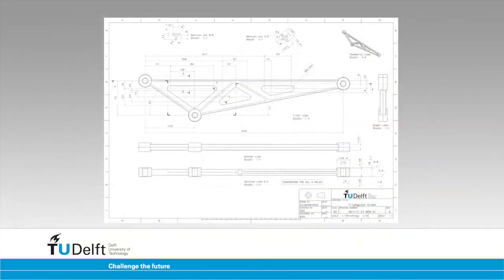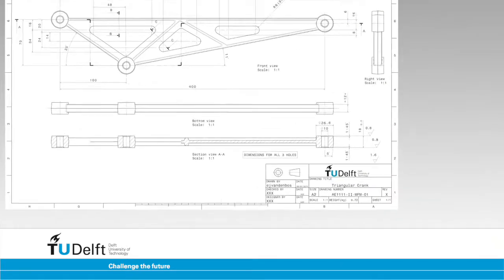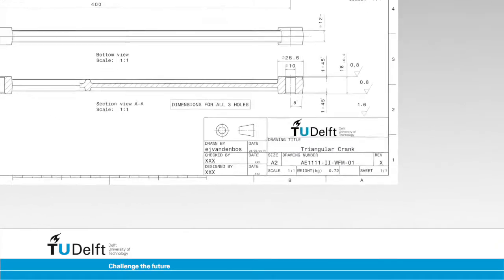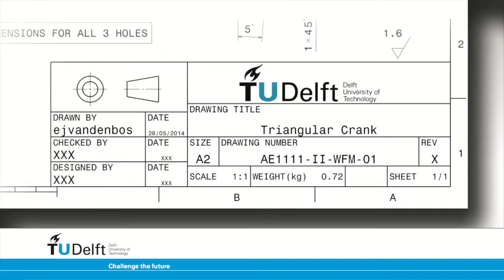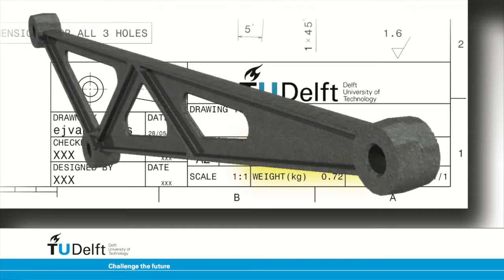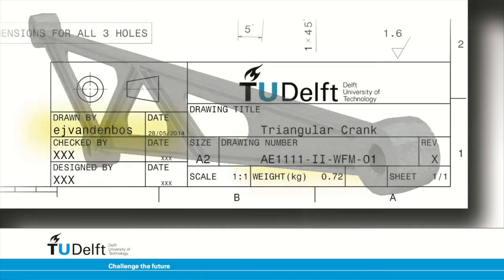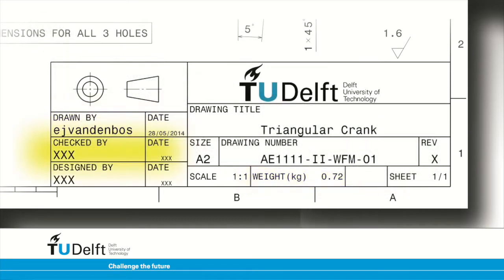The title block is located at the right bottom corner of any drawing. It contains information about the shown object, such as name, drawing number — which in this case is the file name of the 3D model used to produce the drawing — who created the drawing, the checker, date, paper size, scale, and revision of the drawing. Often the projection method used is indicated using the corresponding symbol.